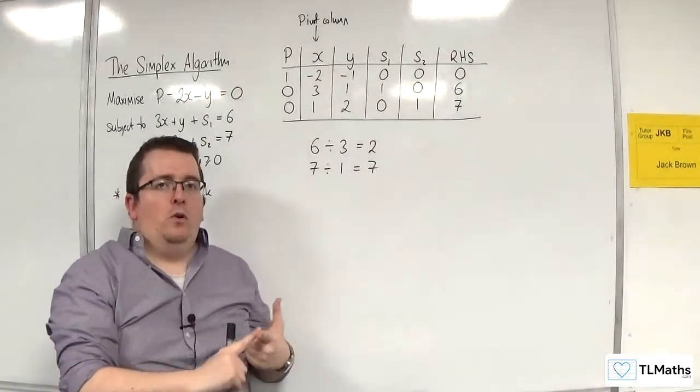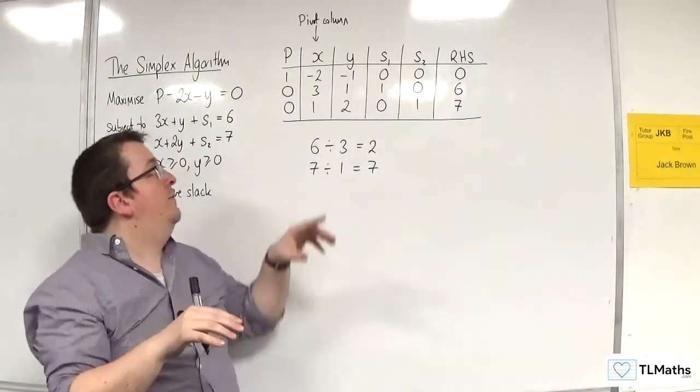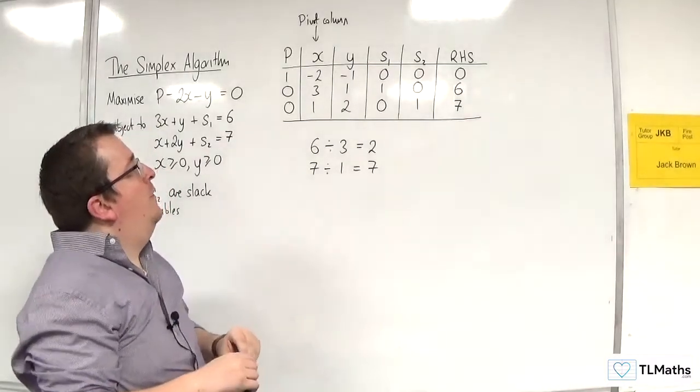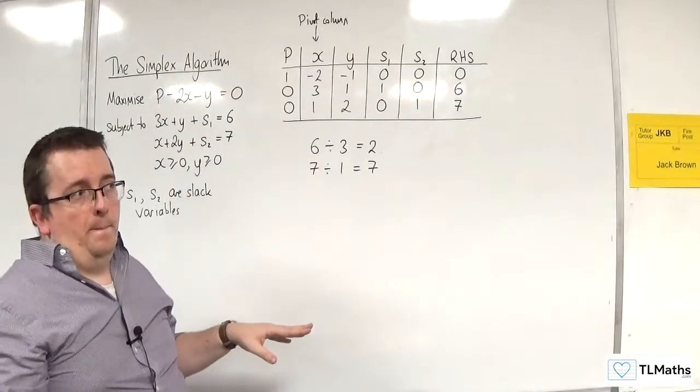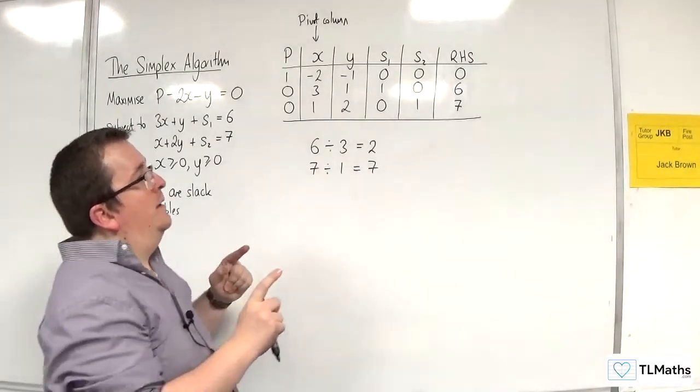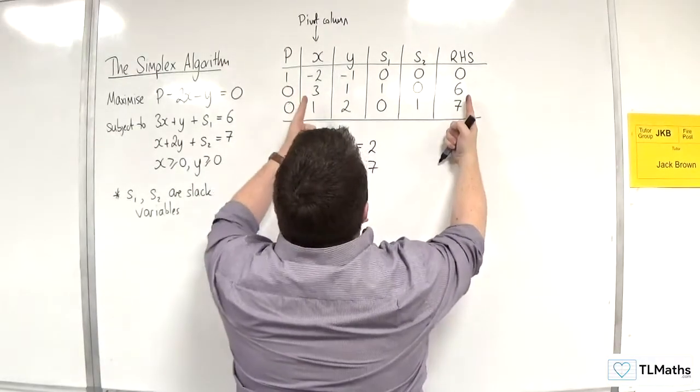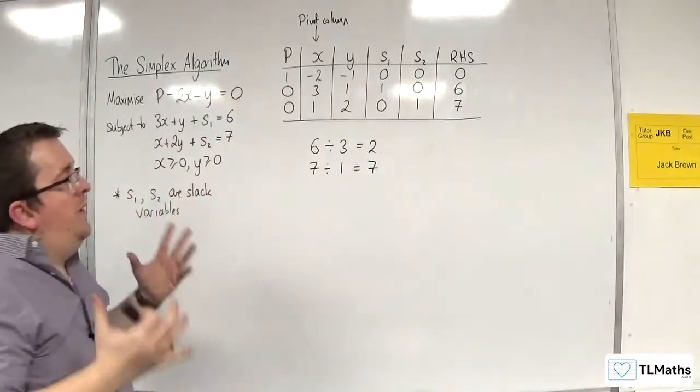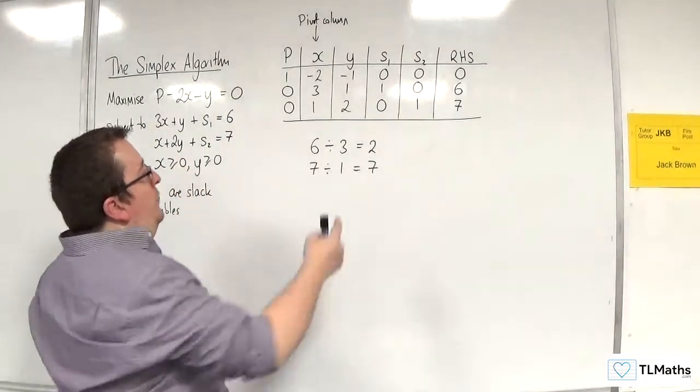you ignore any dividing by zero. So you ignore that one. So if there were any zeros here, ignore that. And if any of them were negative, you ignore those as well. So you're only looking for a positive entry divided by a positive entry here. And then what you do is you pick the smallest of those two. And so that's the two.